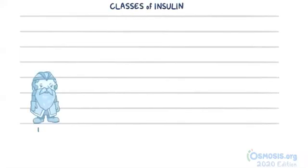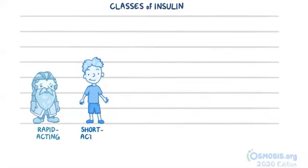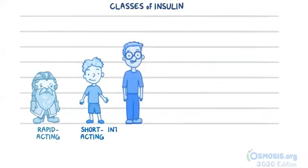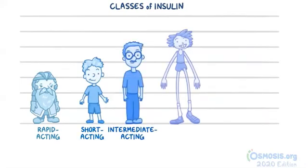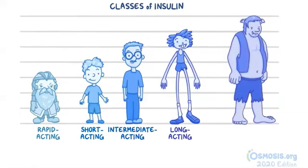Let's make a simple mnemonic to help memorize these pharmacology facts. Imagine an athletic event where each contestant represents a class of insulin: a dwarf for rapid-acting insulin, a regular boy for short-acting, a man of average height for intermediate-acting, a tall man with abnormally long legs for long-acting, and an ogre for ultra-long-acting.